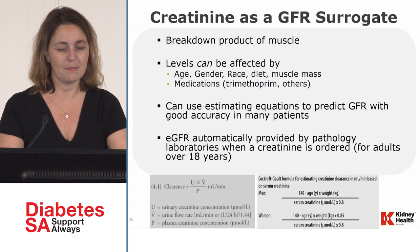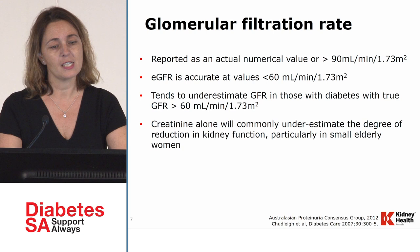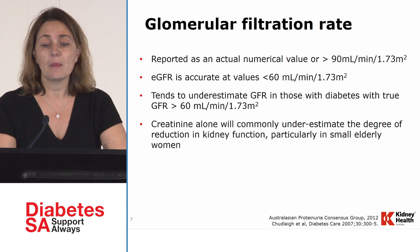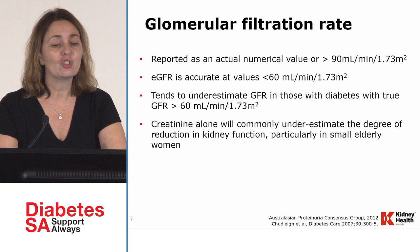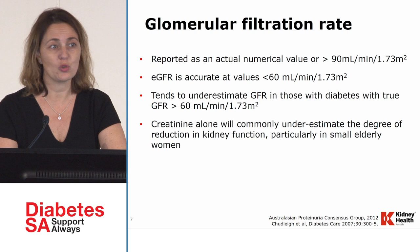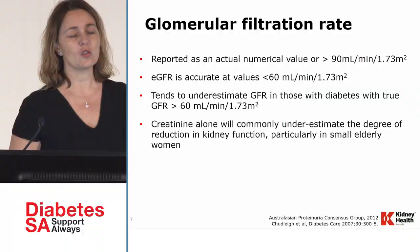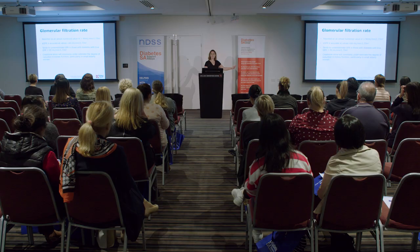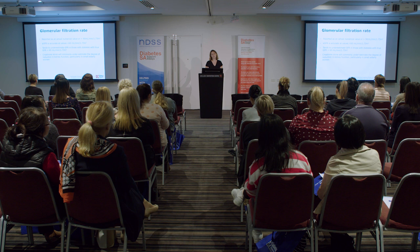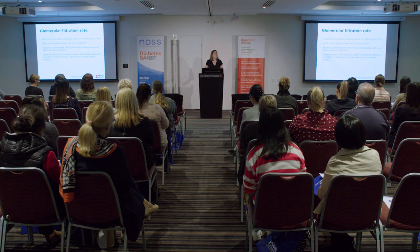Glomerular filtration rate should be more than 90 mL per minute per 1.73 m². Values under 60 indicate kidney disease, though we may not know if it's acute or chronic. We need to be careful — a creatinine that appears normal may still correspond to a GFR below 60, especially in elderly patients, where lower muscle mass means GFR may be lower than expected even with a creatinine of 100.